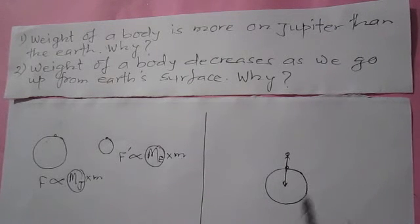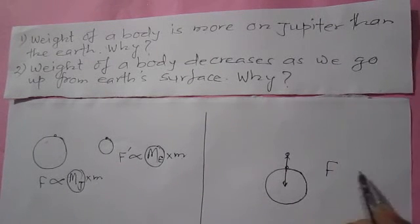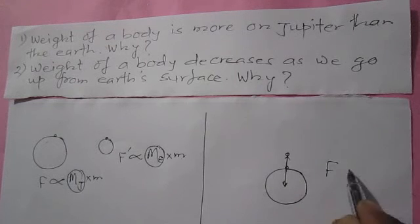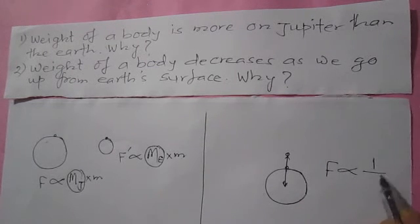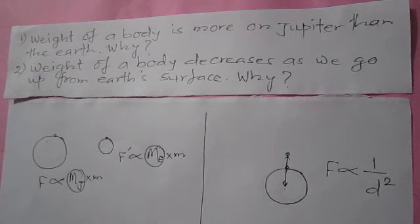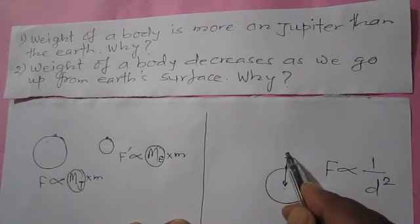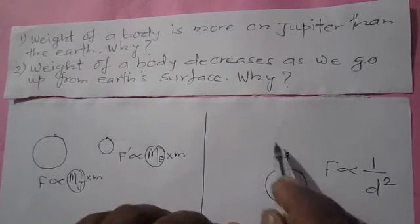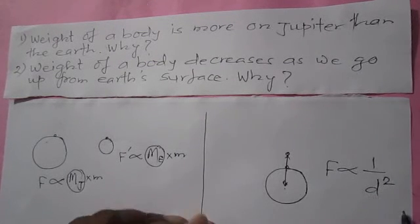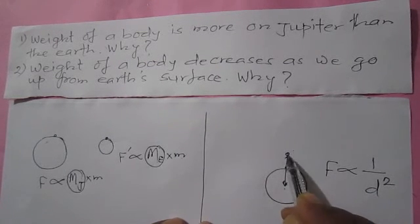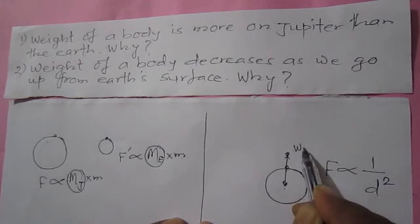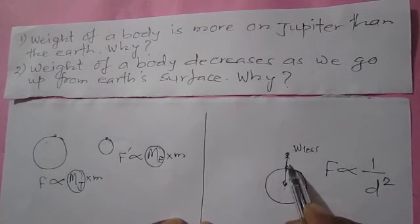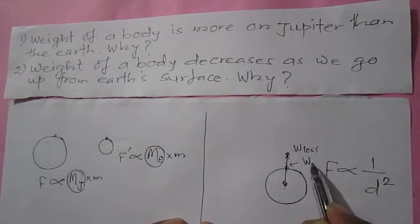According to Newton's law of gravitation, the gravitational force between any two bodies is inversely proportional to the square of the distance between their centers. Since the distance is increased, the gravitational force between the body and the Earth will decrease, and hence the weight also decreases at height. That's why at greater height the weight will be less, and at the surface the weight will be more.